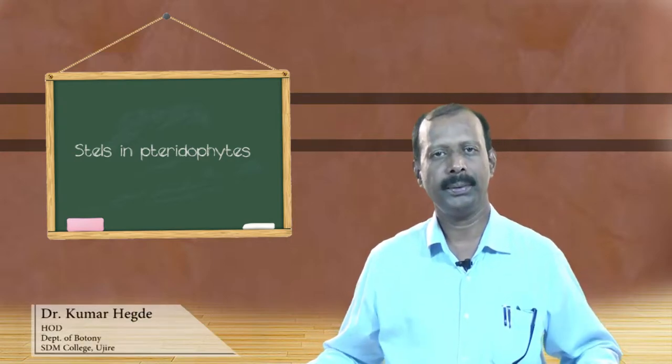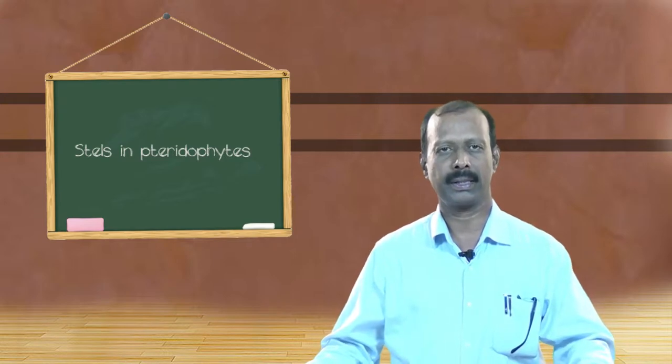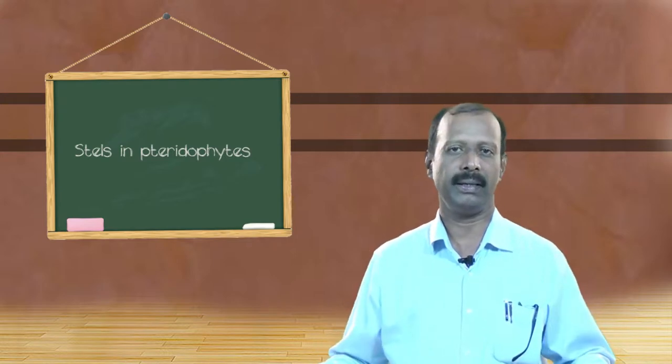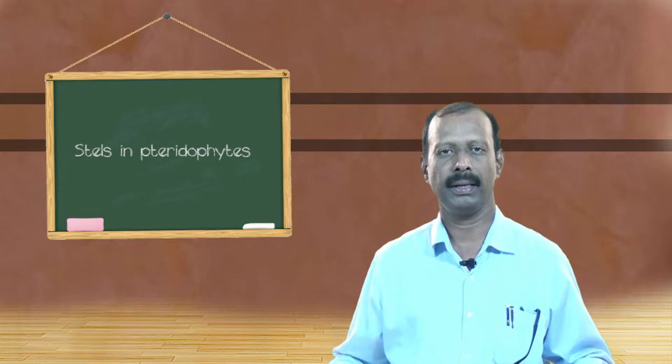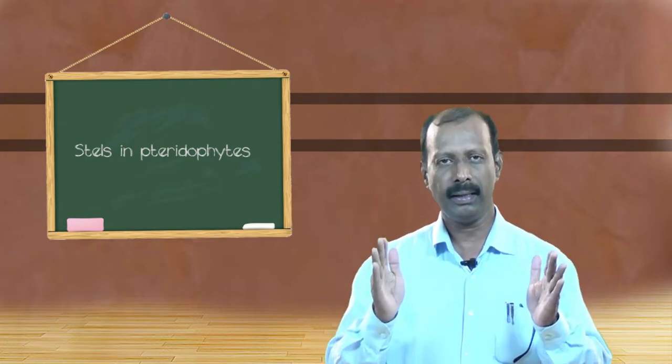As all of you know, stele is the innermost part of the anatomy. When a transverse section of the stem or root is taken, it shows three parts: outer epidermis, middle cortex, and the inner stele.